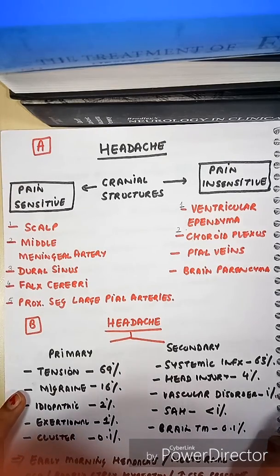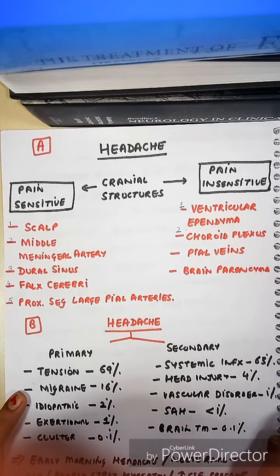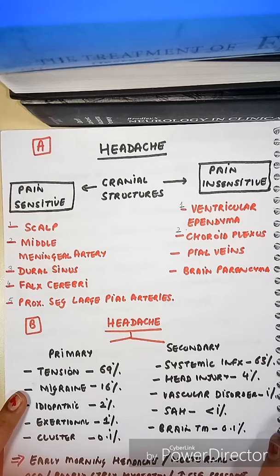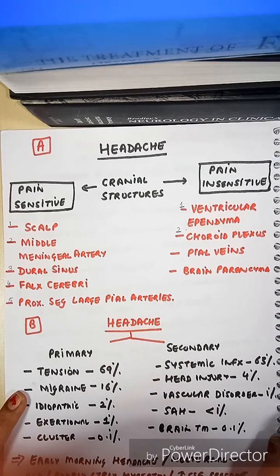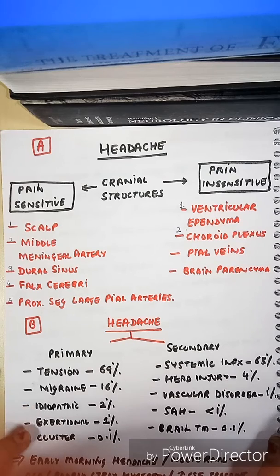There are two types of headaches: primary headache and secondary headache. The commonest type of headache in the community is tension-type headache at 69%, followed by migraine at 16%, and then idiopathic exertional and cluster headache.